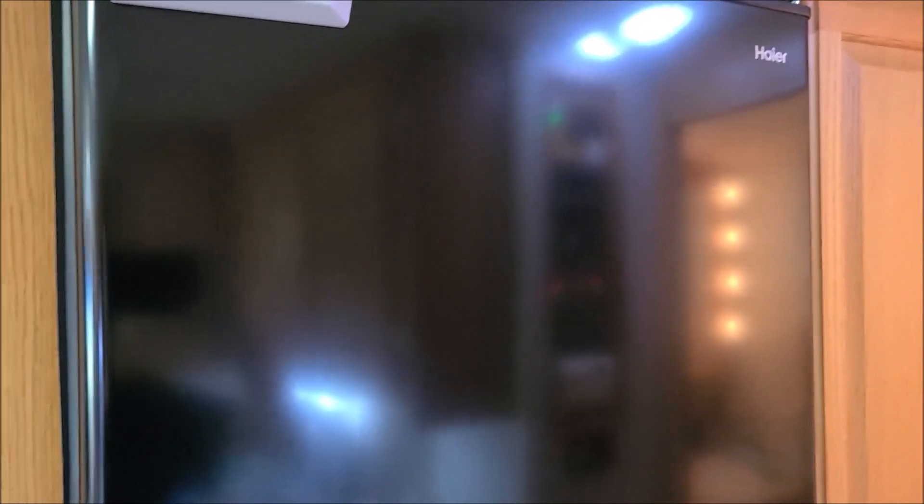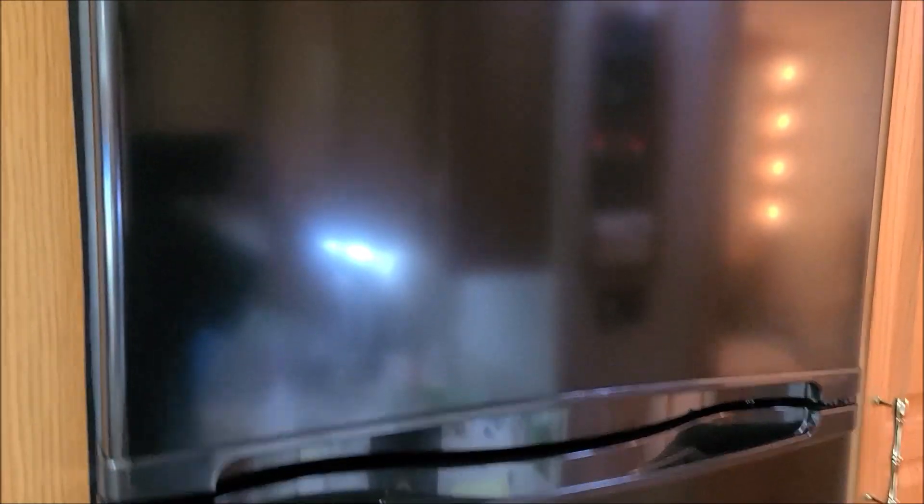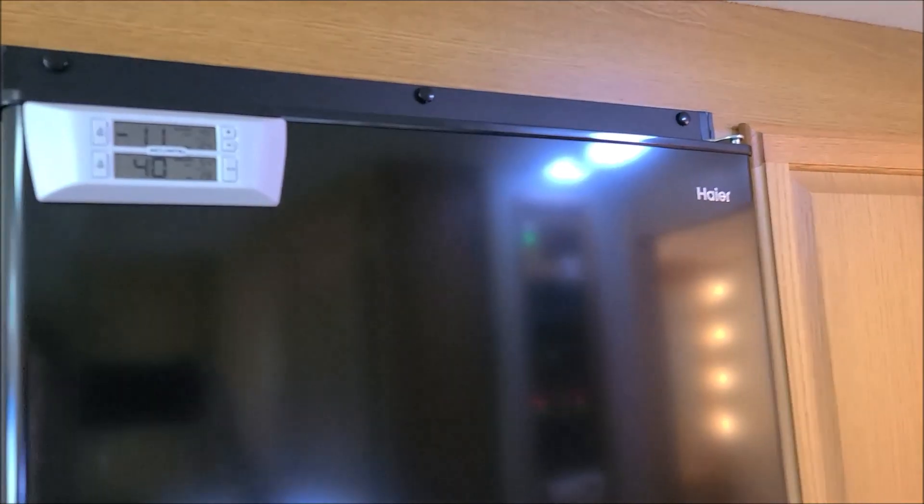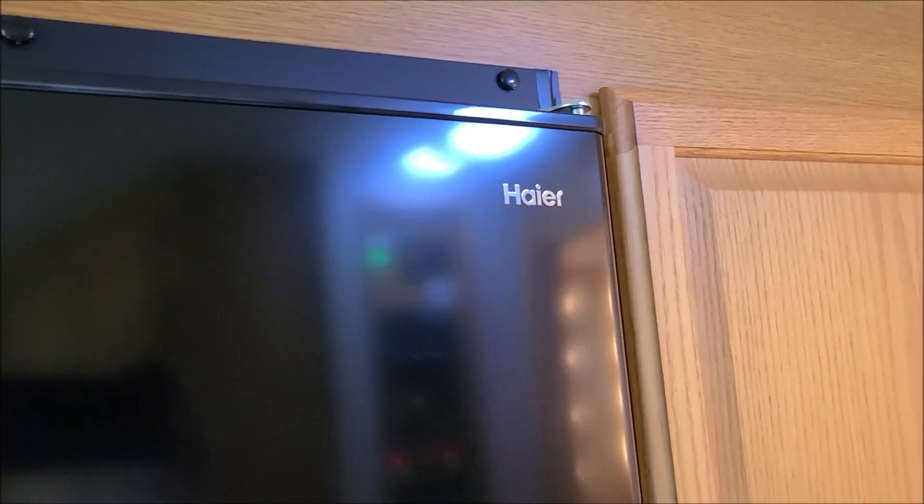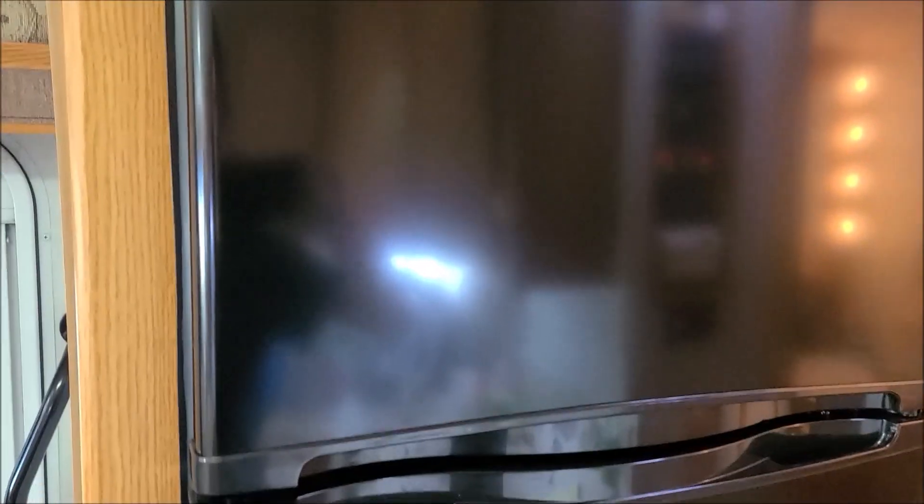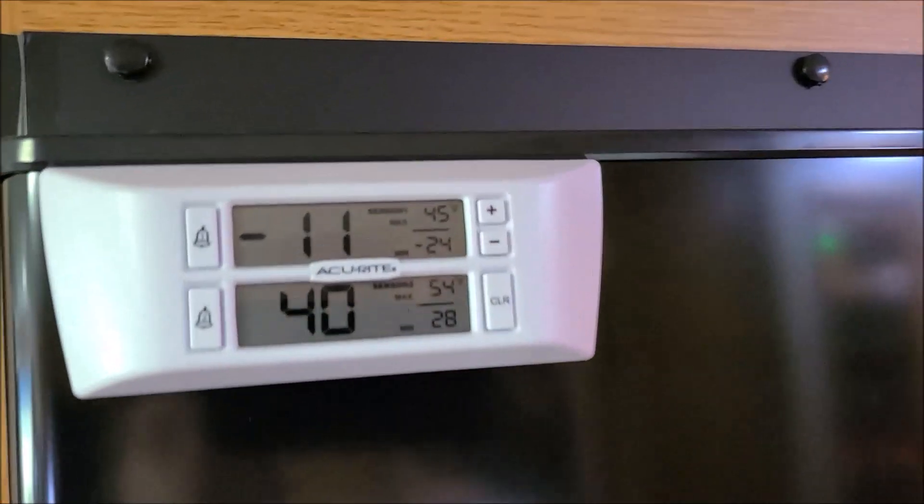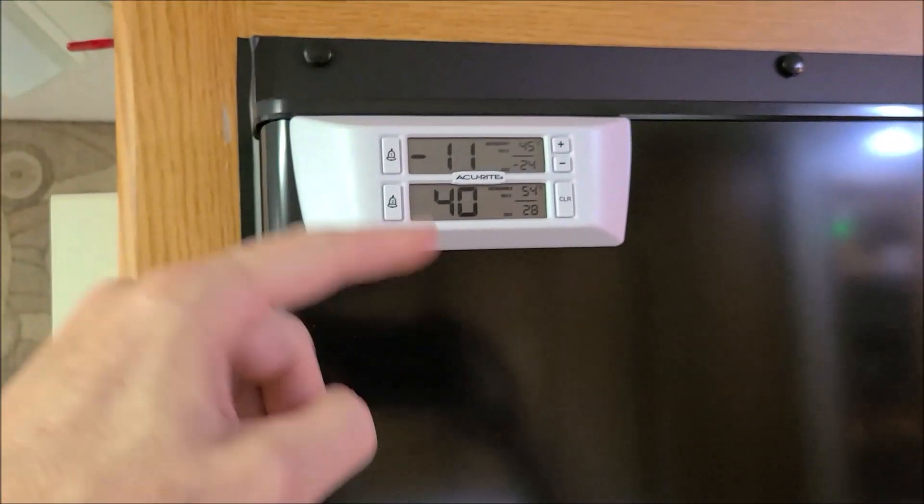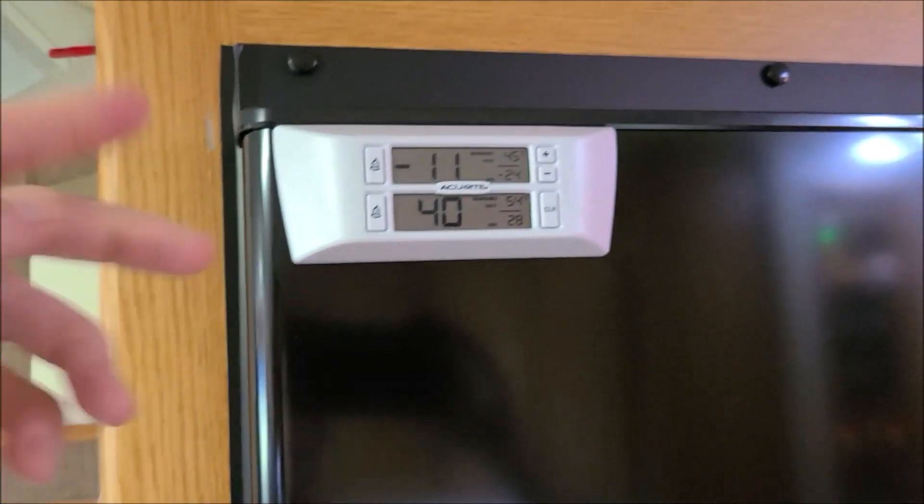Because this is the refrigerator we put in almost a year and a half ago. Great RV refrigerator. We got rid of the old Norcold, put in this Haier, I don't know how to pronounce the crazy thing. It's been doing an awesome job. It's been running since I plugged it up. And you see in the freezer is minus 11, 40 degrees in the fridge, and it cycles back and forth from 35 to 40.